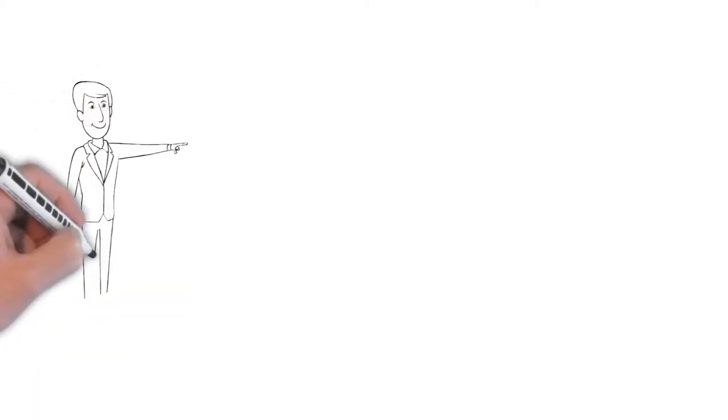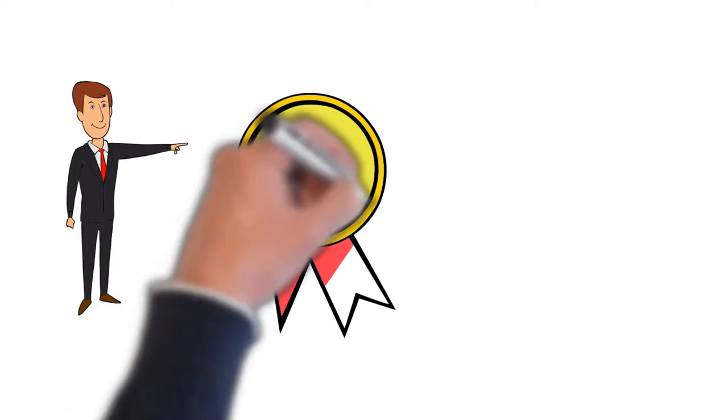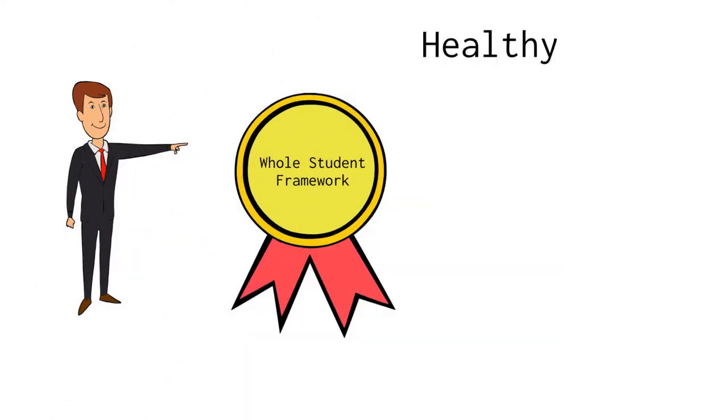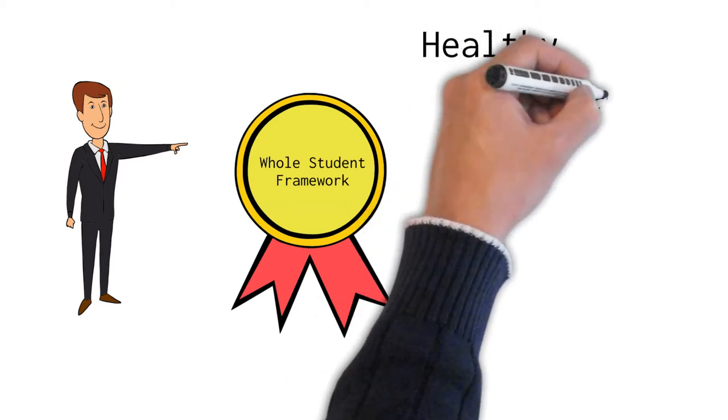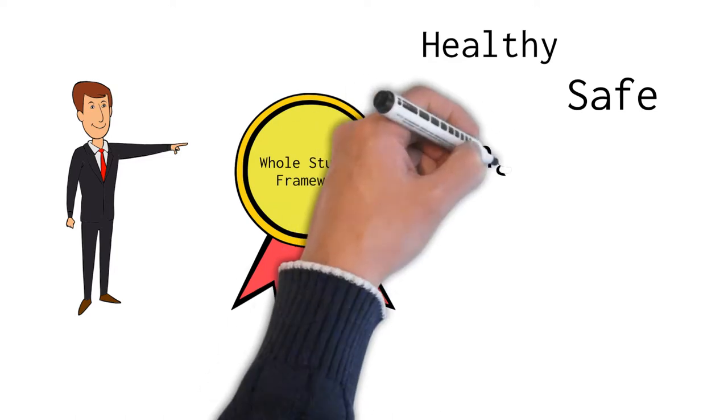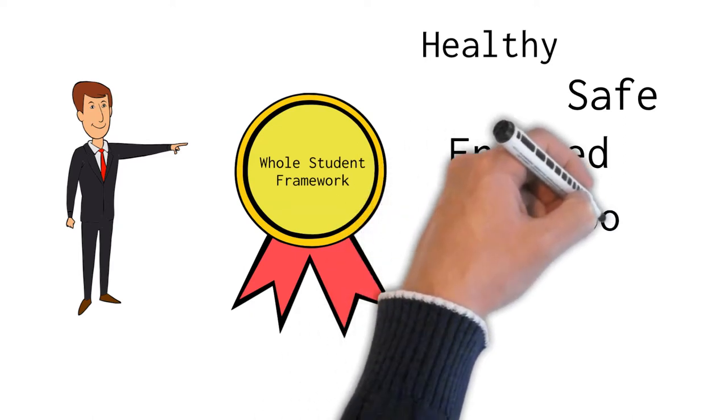This all aligns very closely with the department's vision of educating the whole child. Our work focuses on these six tenets. Each student enters school healthy and learns about and practices a healthy lifestyle. Each student learns in an environment that is physically and emotionally safe for students and adults. Each student is actively engaged in learning and is connected to the school and the broader community.